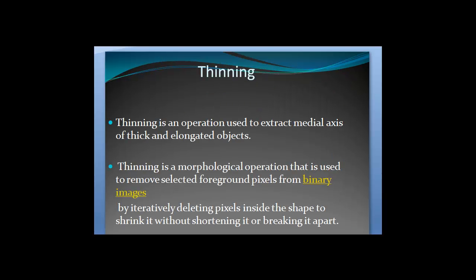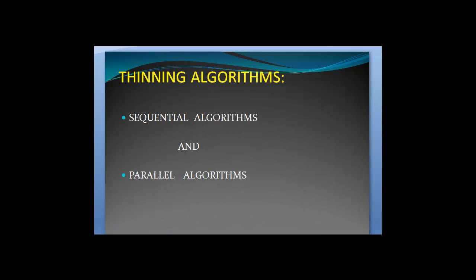Thinning is an operation used to remove the unnecessary pixels of an image. There are two types of thinning algorithms: the sequential algorithm and the parallel algorithm. In our case, we use the parallel algorithm.